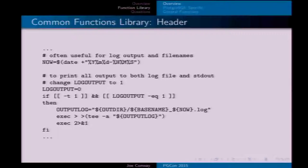Often you want to create some kind of log with a timestamp on it, because you're going to be running the script over and over again and you want it to sort correctly when you list a directory. If you want all output — everything going to standard out or standard error — to also be captured to a log file, you can turn that on by setting a variable to 1, and then use `tee` to output both to the terminal and to the log file.